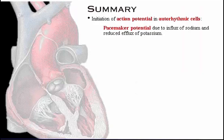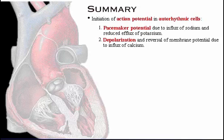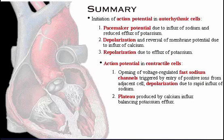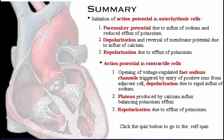Here's a summary of what we've covered. In auto-rhythmic cells, the pacemaker potential is due to the influx of sodium and reduced efflux of potassium, which triggers an action potential. Depolarization and reversal of the membrane potential is due to a rapid influx of calcium. Repolarization is due to the efflux of potassium. For action potentials in contractile cells, the opening of voltage-regulated fast sodium channels is triggered by the entry of positive ions from an adjacent cell. Depolarization is due to the rapid influx of sodium. A plateau is produced by calcium influx, which balances the potassium efflux. Repolarization is due to the rapid efflux of potassium. To test your knowledge, click the quiz button to go to the self-quiz.